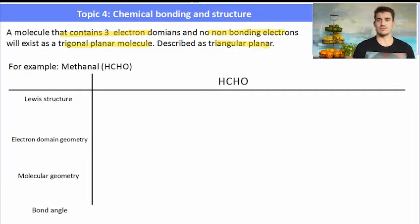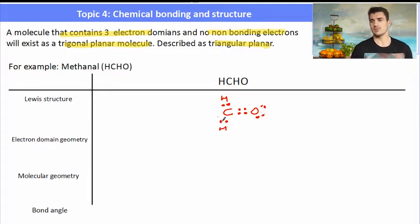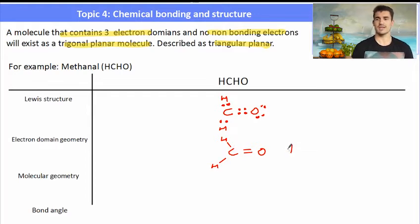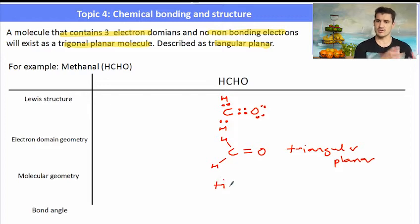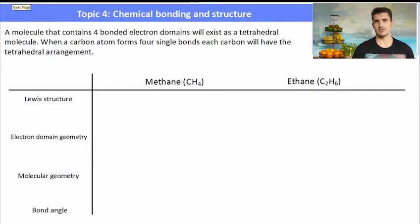A molecule that contains three electron domains and no non-bonding electrons exists as what we call a trigonal planar molecule. This is the example of methanal, where we have a carbon which is double bonded to an oxygen and it has two single bonds to two hydrogens. Because the carbon has three regions of negative charge, those three regions will repel each other as far away as possible, giving us the trigonal planar arrangement. The molecular geometry is also described as trigonal planar with a 120 degree bond angle.